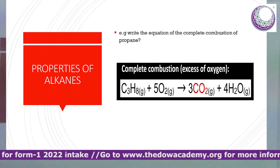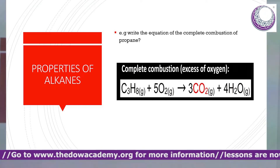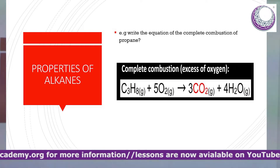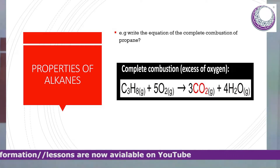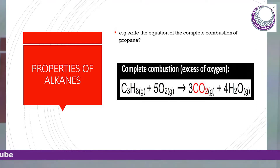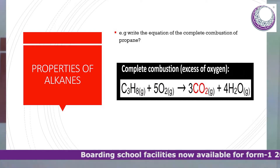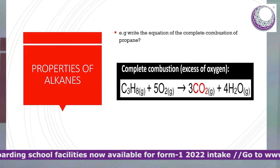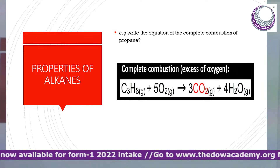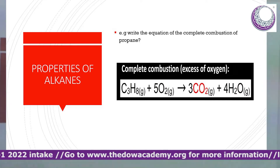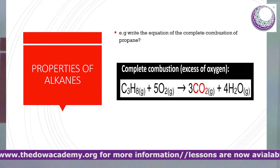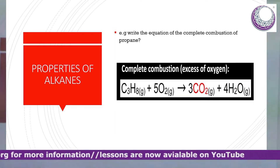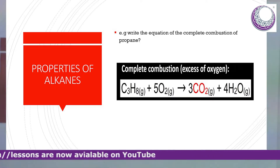The oxygen atoms are ten on the right: three times two from CO2 is six, plus four from the four water molecules gives ten. So ten oxygen atoms on the left and ten on the right. This shows how to balance a combustion equation. When complete combustion is done, alkanes give rise to carbon dioxide and water.